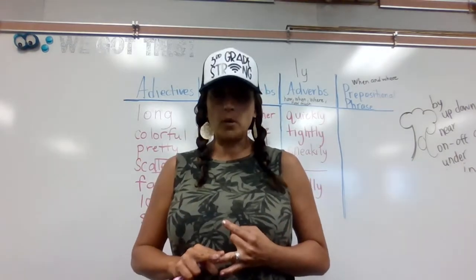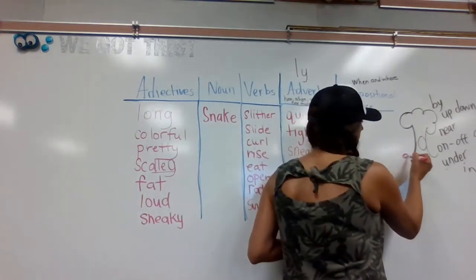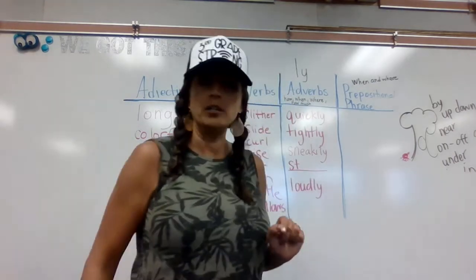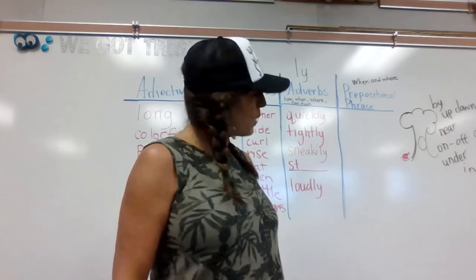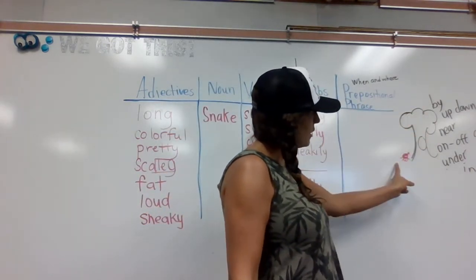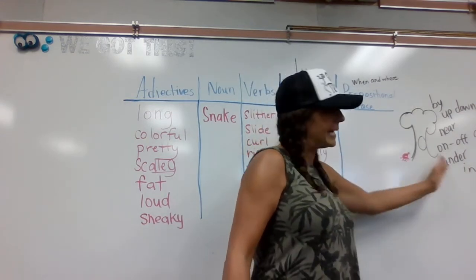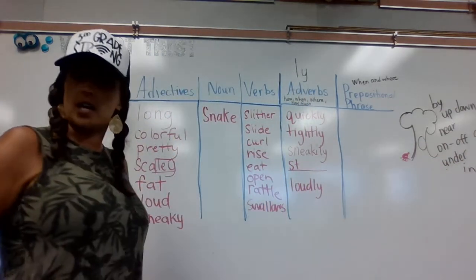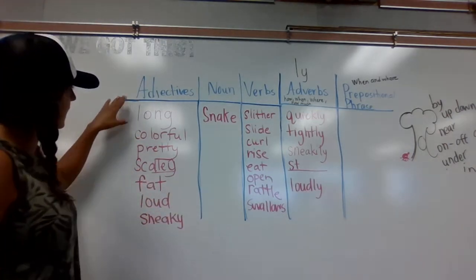A prepositional phrase tells us when and where. Think about a little squirrel — if a squirrel can do it to a tree, then that's a prepositional phrase. Like the word 'by' — it can go up the tree, down the tree, near the tree, on the tree, off the tree, over the tree, or in the tree hiding its nuts from predators.